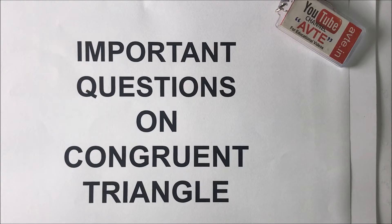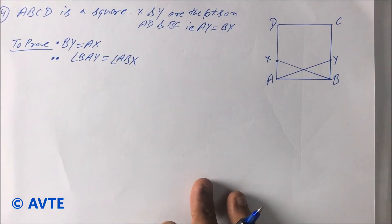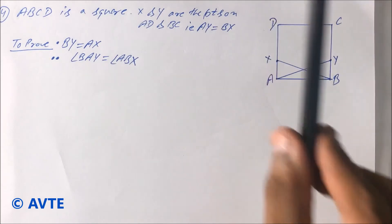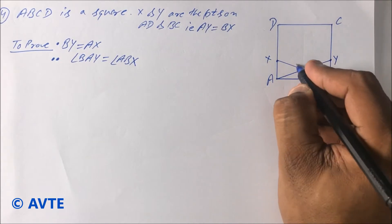So guys, in this series we are taking good questions on congruent triangles. This is question number 4. In this question, ABCD is a square and X and Y are the points on AD and BC respectively such that AY is equal to BX.